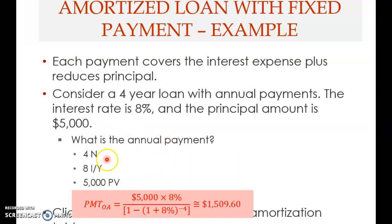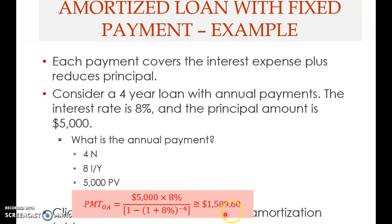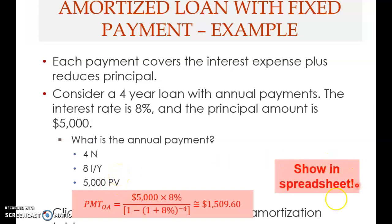Using the payment formula for an ordinary annuity: take the present value multiplied by the interest rate, divided by one minus one plus r (eight percent) raised to the power of negative four. This gives you the fixed payment you need to make every year for four years, which is enough to fully repay your $5,000 loan.